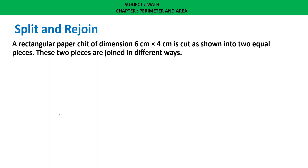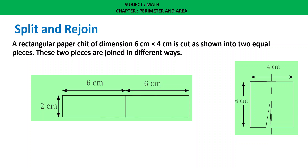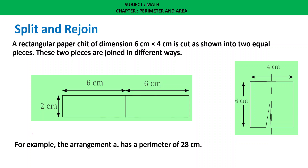Let us do split and re-join. A rectangular paper sheet of dimensions 6 centimeters by 4 centimeters is cut into two equal pieces, then joined in different ways. One arrangement gives a length of 12 centimeters and breadth of 2 centimeters. Using the formula perimeter equals 2 times (L + B), that is 2 times (12 + 2) equals 28 centimeters.